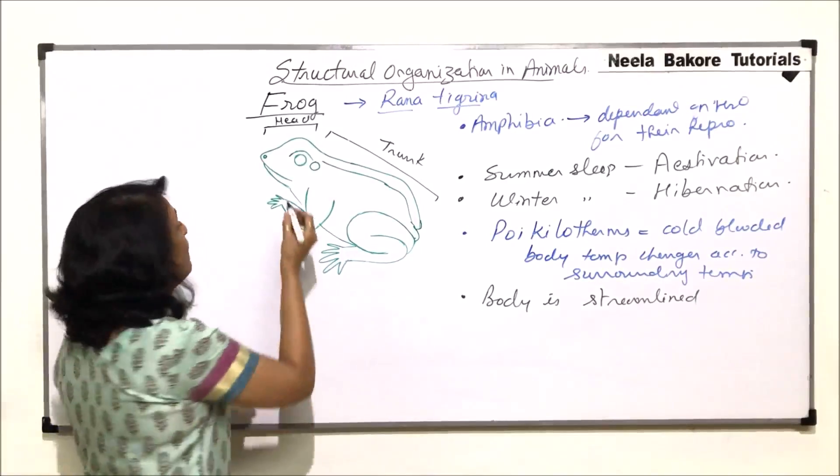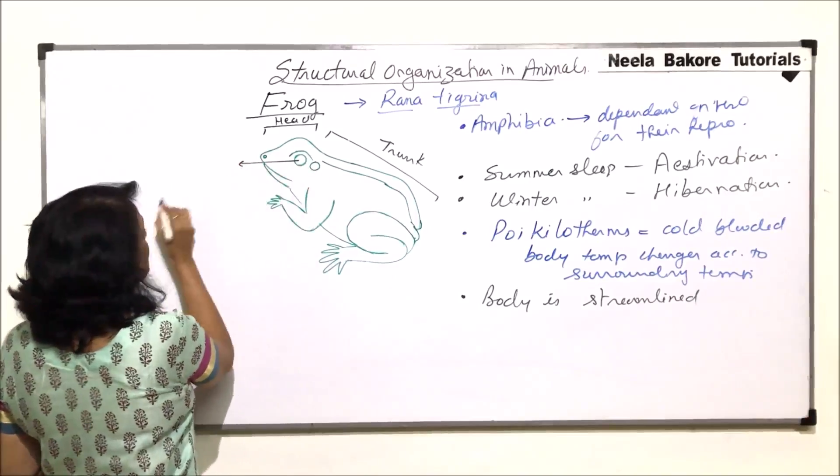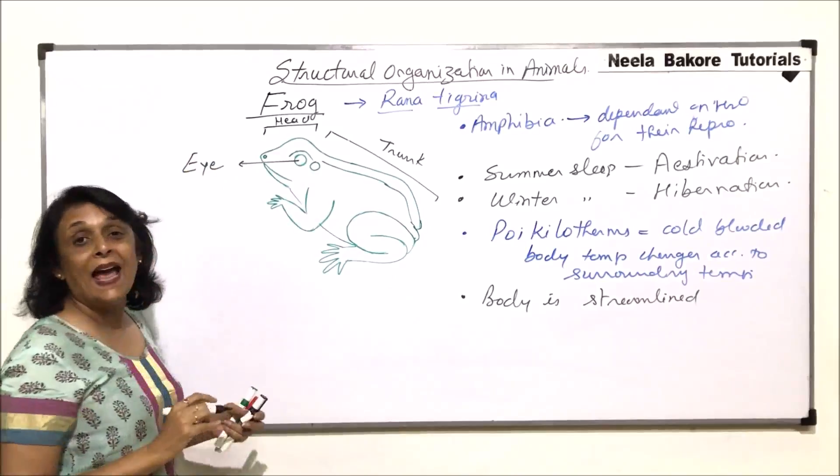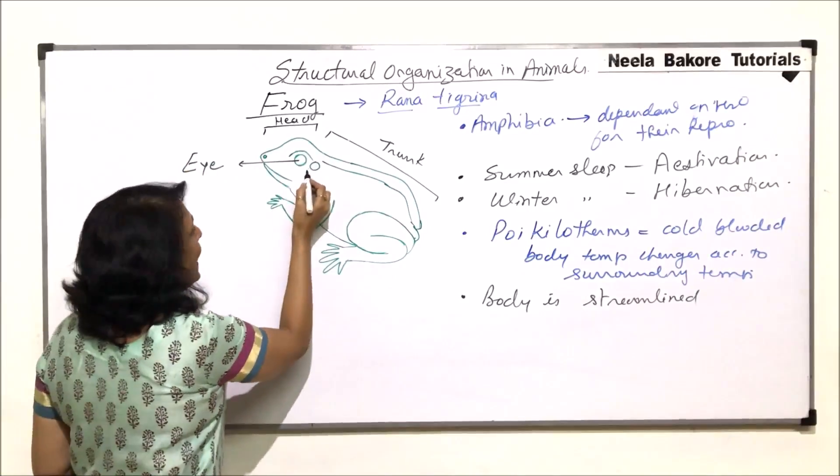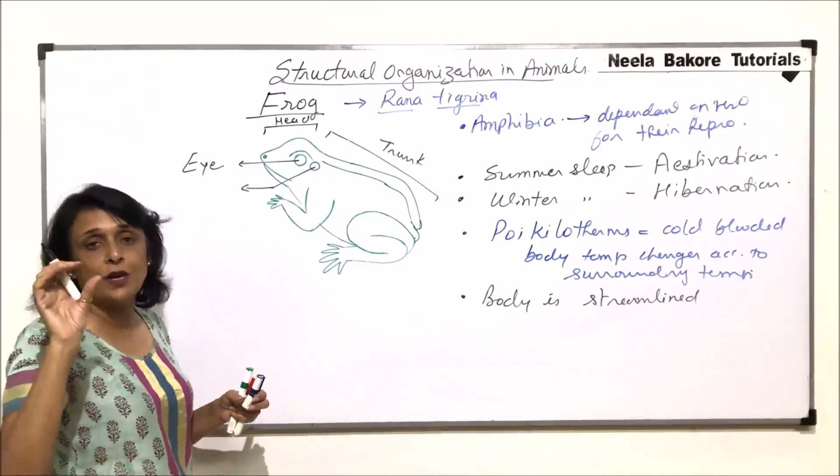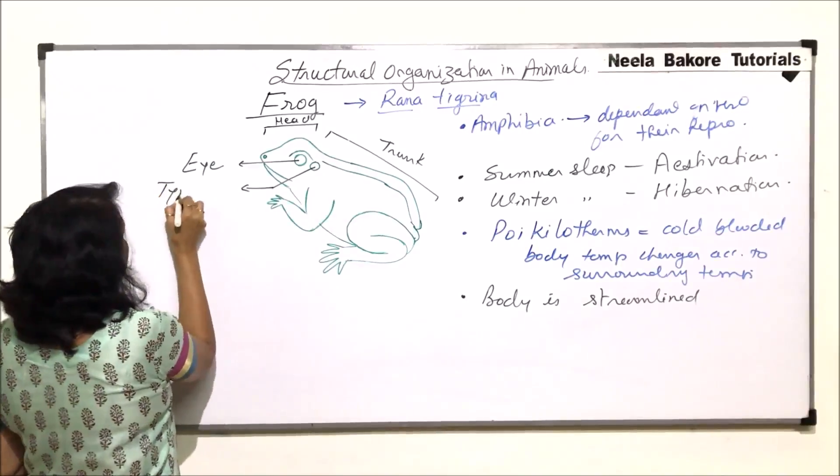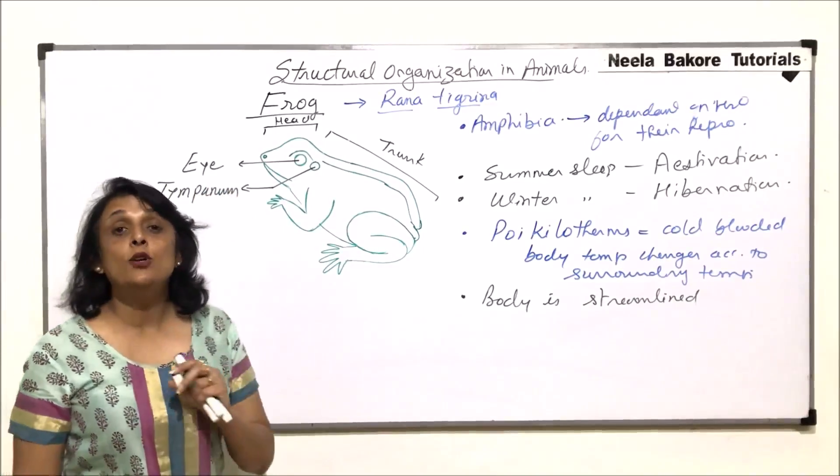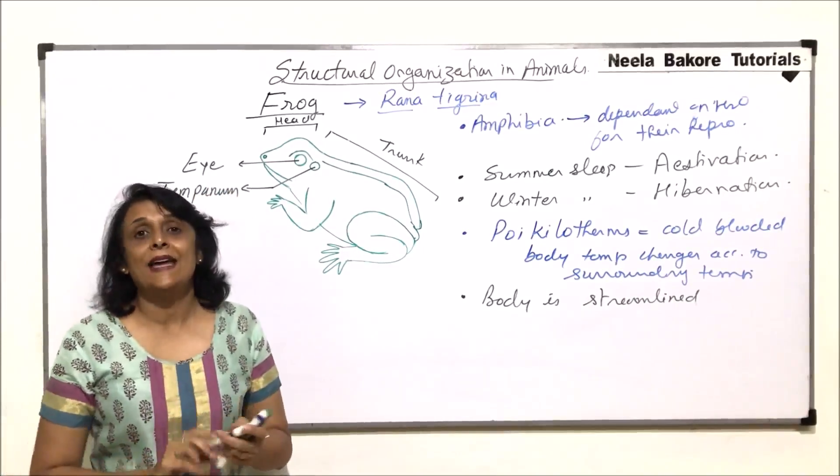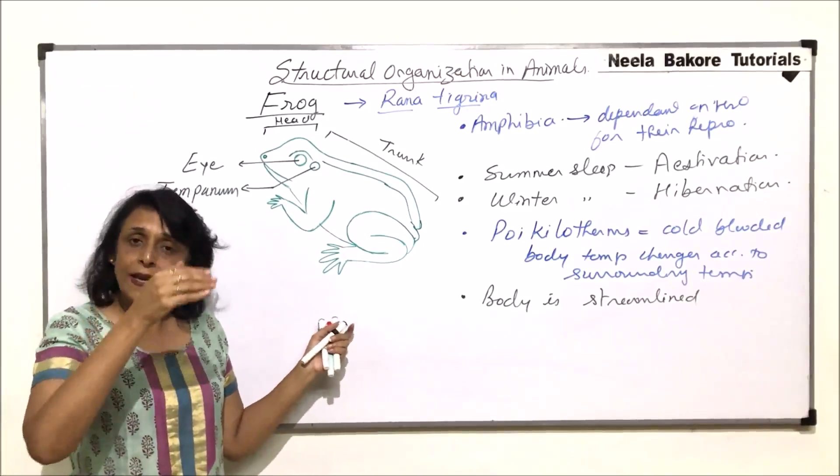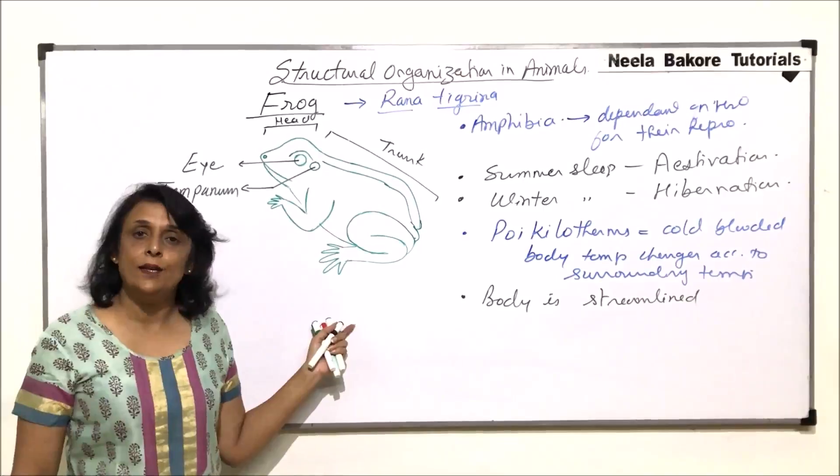The eyes are bulging. So this structure which we have drawn, these are the bulging eyes. And just behind the eye, there is a circular structure which is called the tympana. This is actually the eardrum. They do not have the external ear. Only the tympana part is there and then there would be the inner ear.